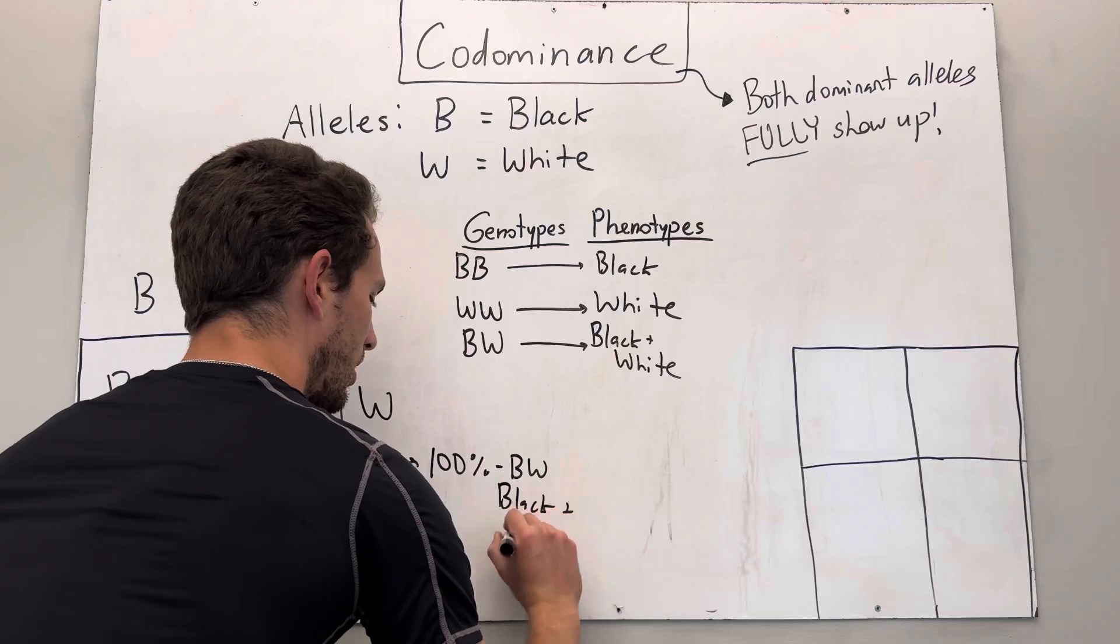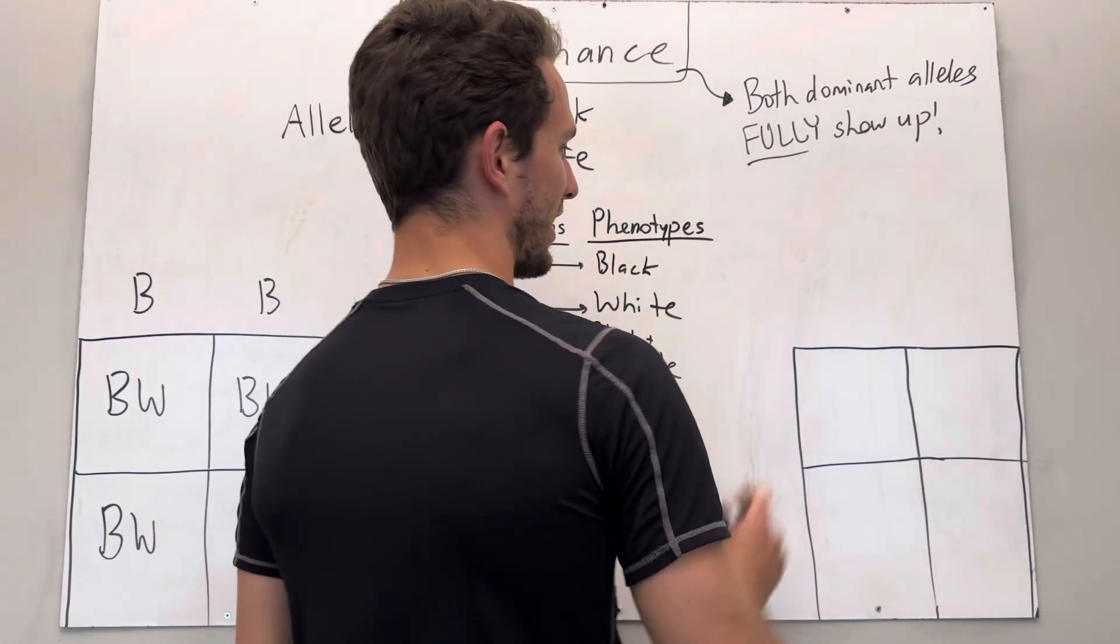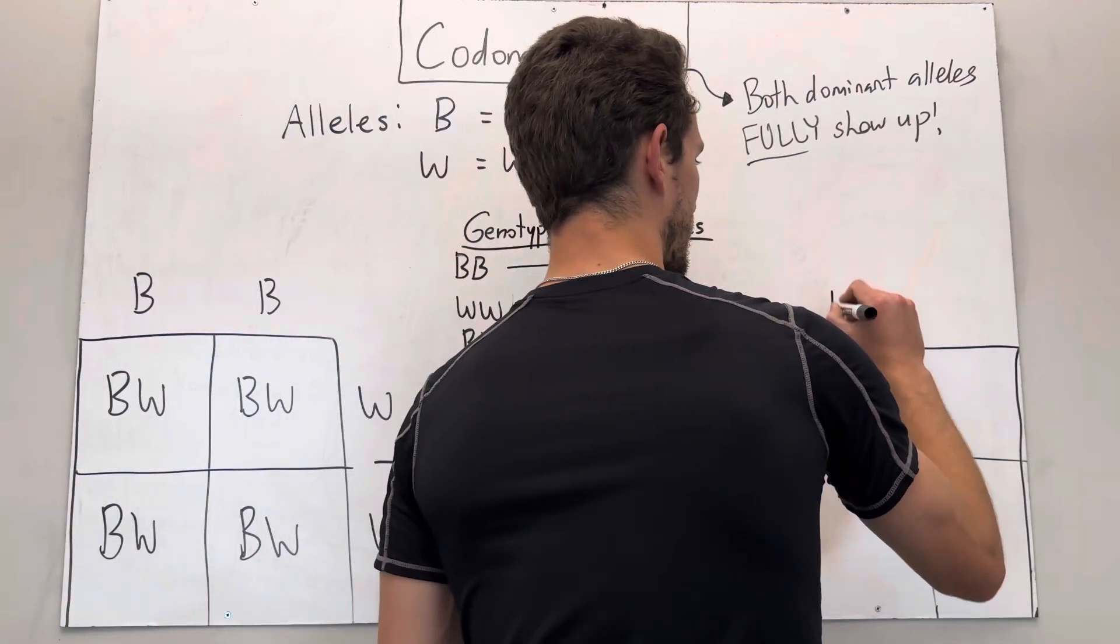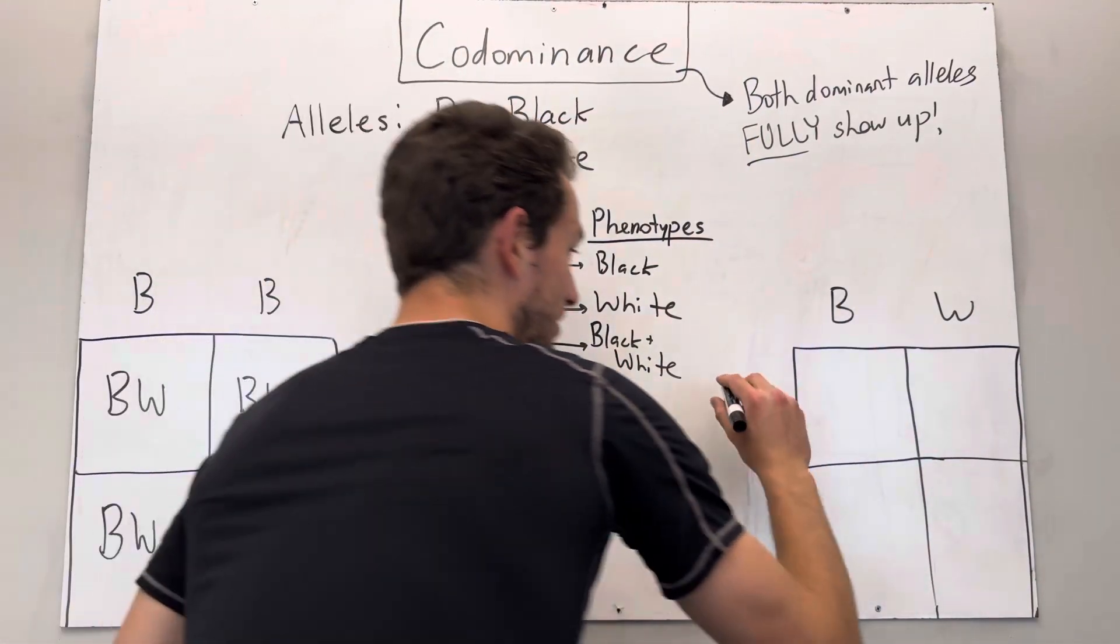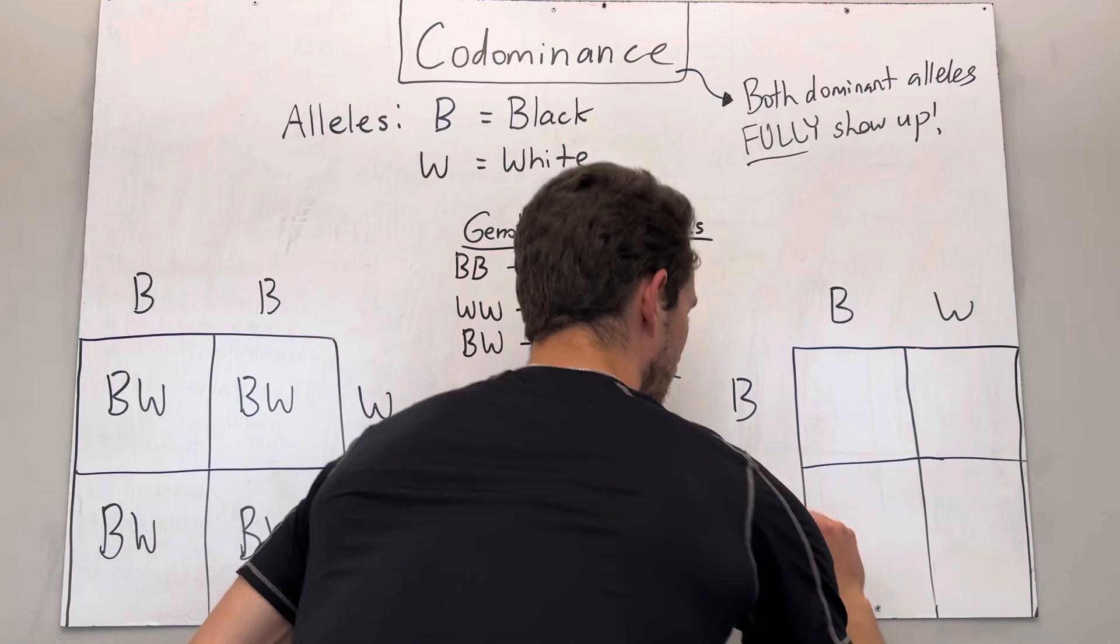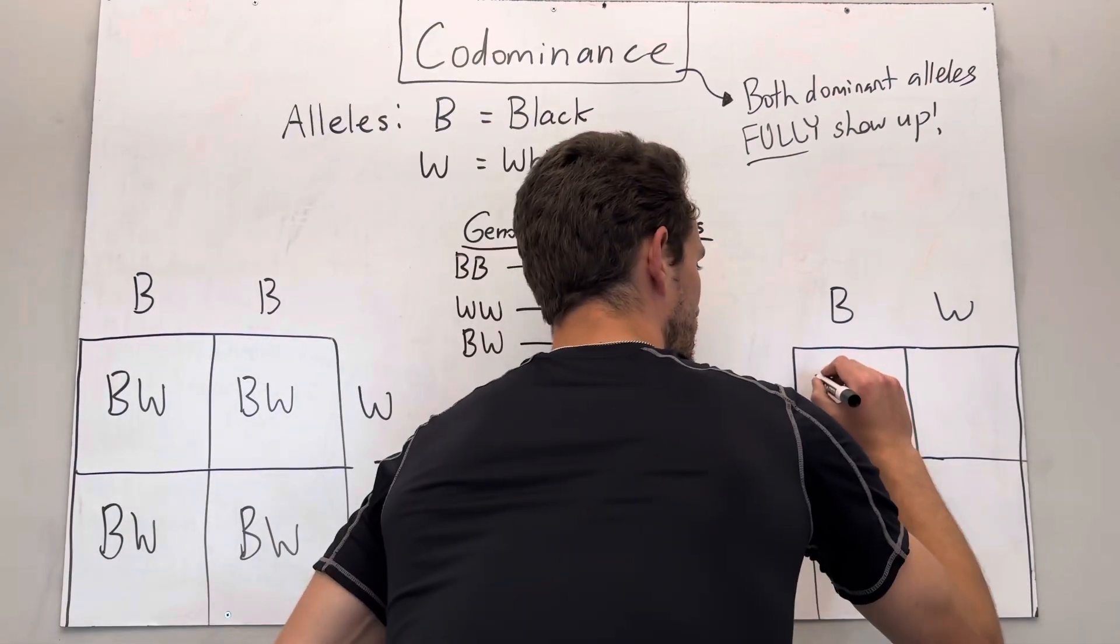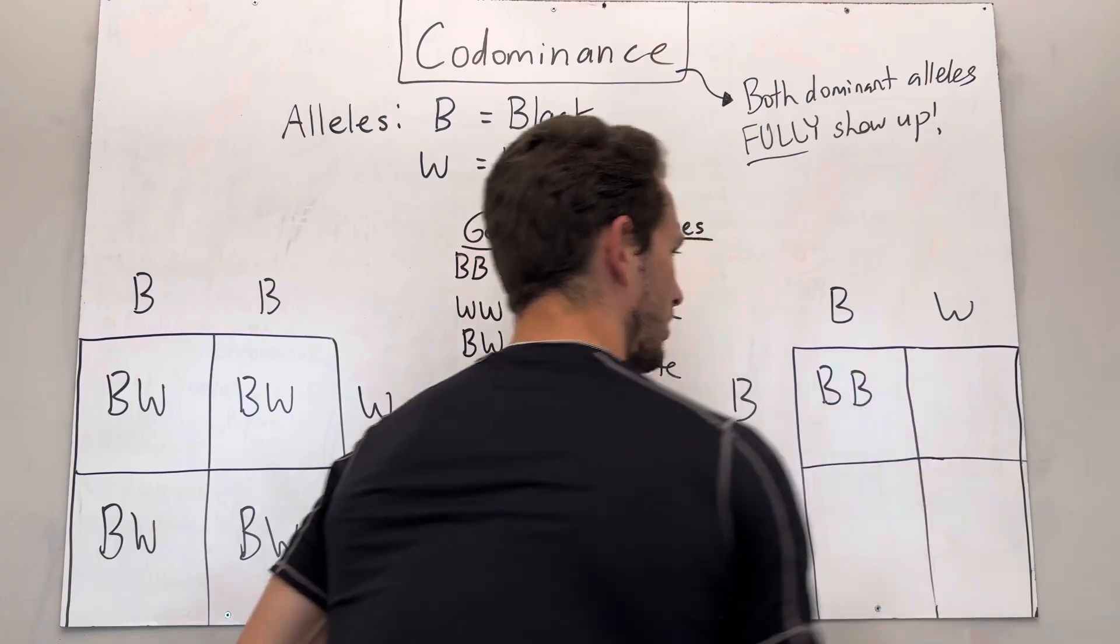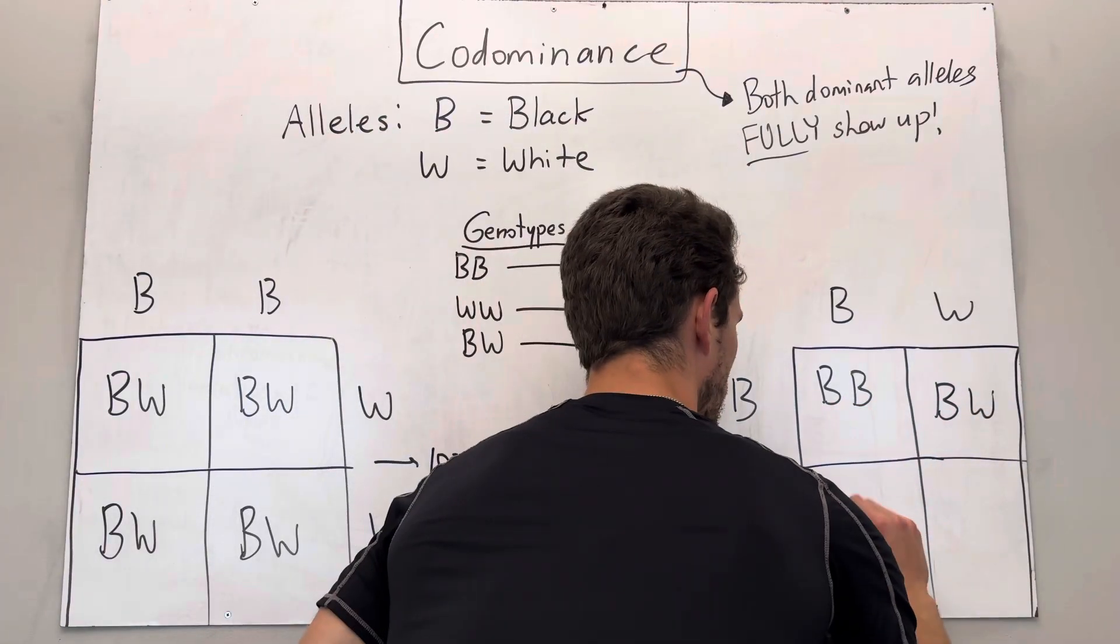Now let's take another example, a little more complicated. Let's say both cats, both parents, are going to be heterozygous. So mom is a black and white cat, and dad is also a black and white cat. Well, in this example, we've got a cross here big B big B, then we've got a cross here BW, cross here BW.